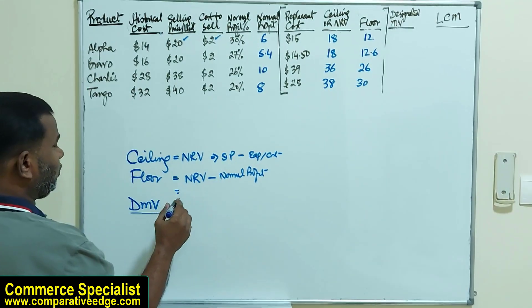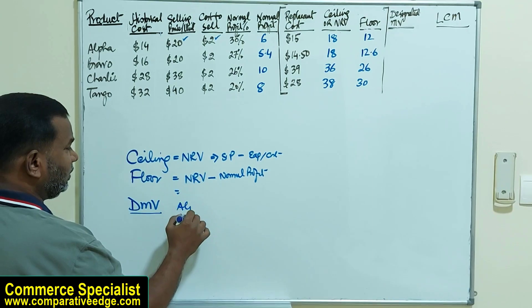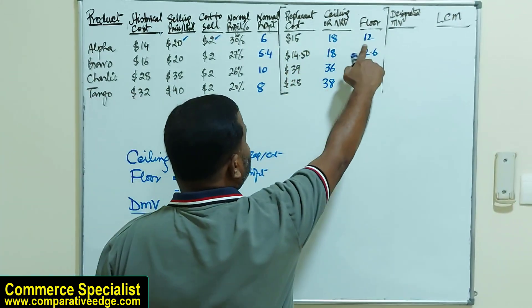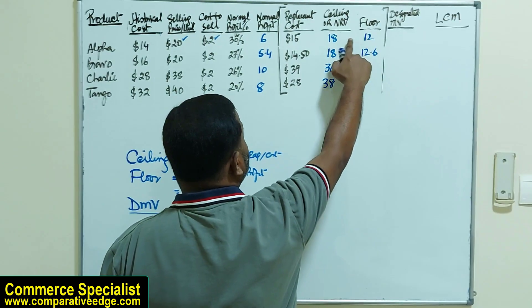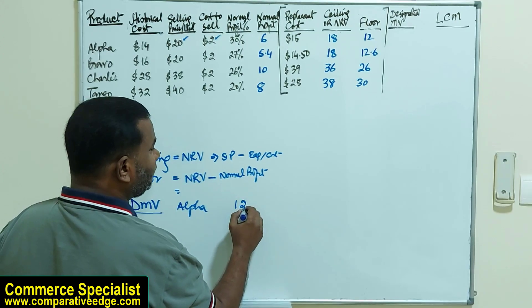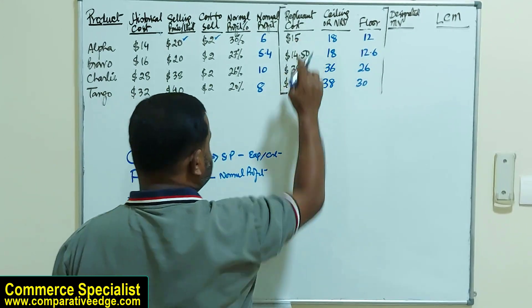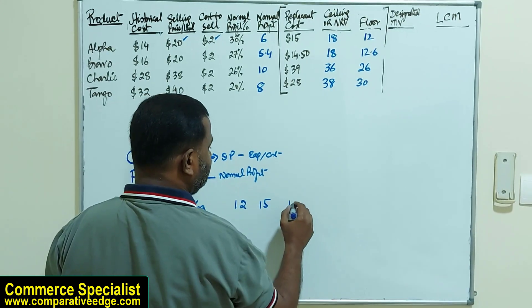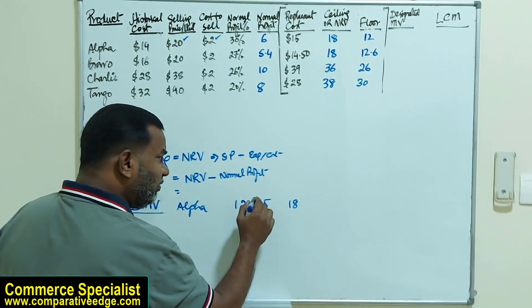Let's suppose I'm talking about Alpha. Ascending order means the lower first and the highest later. So the lowest is $12, then the second highest is $15, then $18. The middle value is called designated market value. So my designated market value here will be $15.